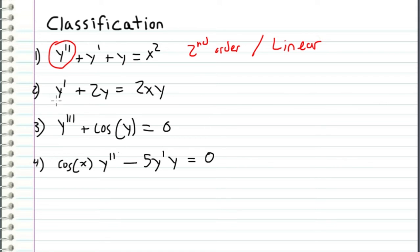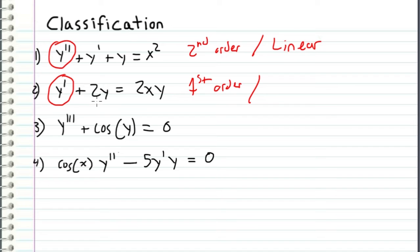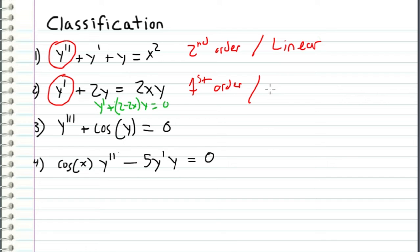In the second example, the highest derivative is the first derivative, so this is a first order differential equation. The coefficients are all functions of only x — they're just constants. On the other side we have y multiplied by x, but we can recognize that we can rewrite this equation as y prime plus two minus two x times y equals zero. Now the coefficient of y is only a function of x. Even though the y term showed up on both sides, we can rearrange it to fit the general linear form, so this is a first order linear differential equation.